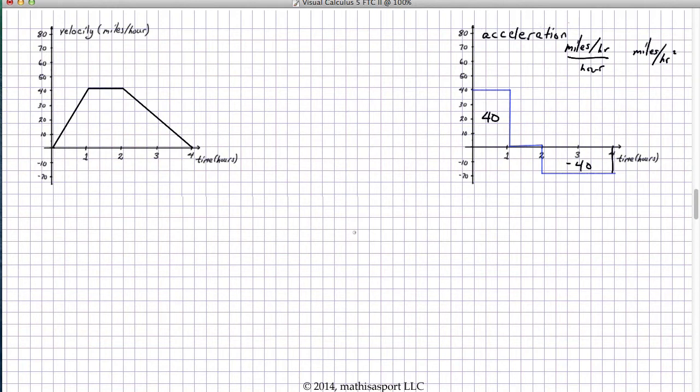Also by analogy with the original relationship between D versus T and R versus T, there's the same problem. We don't have enough information in the acceleration curve to reconstruct the velocity curve. As we've argued before, this curve could have started at a different point, risen with the same slope, gone over, come down.